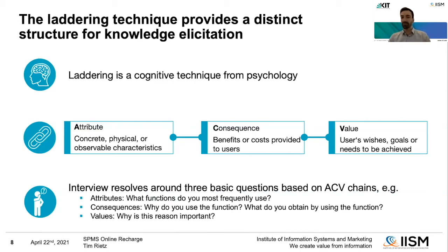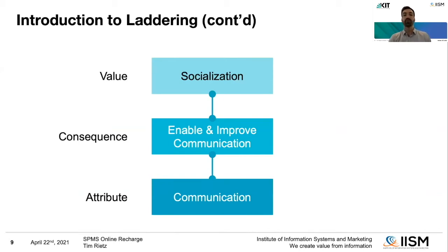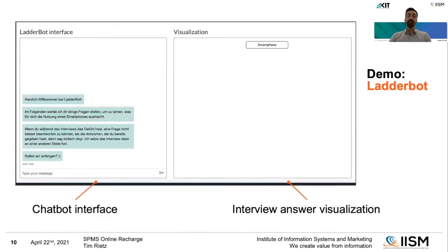The questions you ask are really straightforward — you need the why question and occasionally the what question. You would start with: what functions do you most frequently use? Why do you use this particular function? What do you obtain by using it? And finally: why is this important to you? For example, the communication attribute — WhatsApp — helps me enable communication because calling is more difficult than sending a quick text message. The ultimate value achieved is socialization.